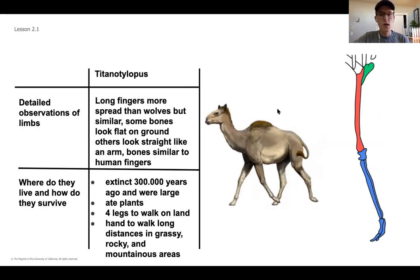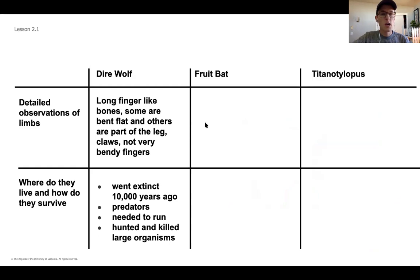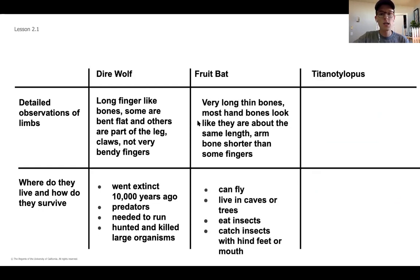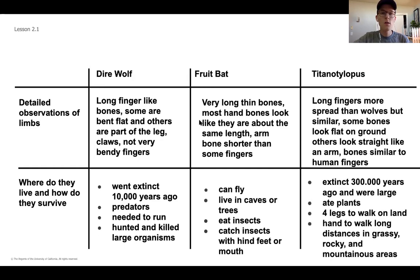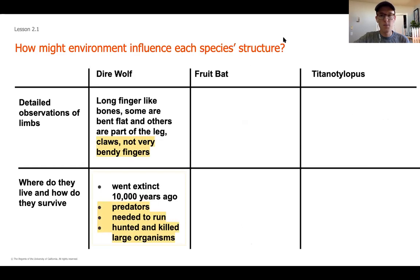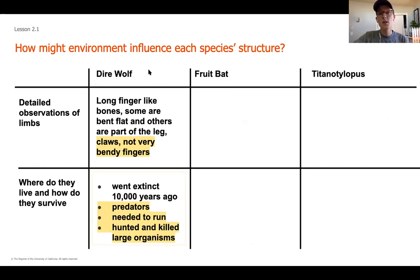What we're going to do now is start to figure out what are some of the things for each of these organisms that would have supported it in its environment. What we're going to be thinking about is how might the environment influence each species' structure. I'm going to walk you through the thinking and model it for you with the wolf. Then your job will be to think about the structures of the fruit bat and the titanolophus - how would their structure, the way that front limb is made up, be influenced by where they live and what they need to survive.